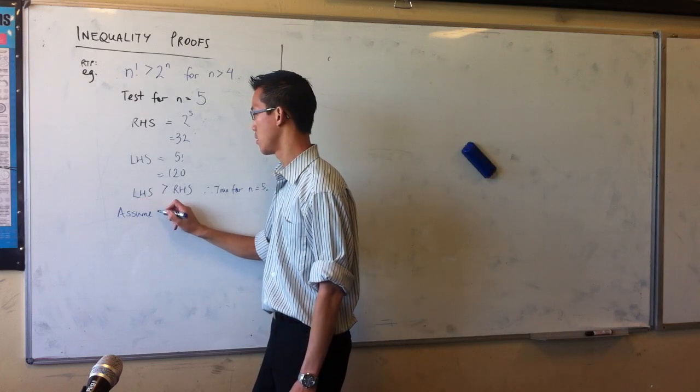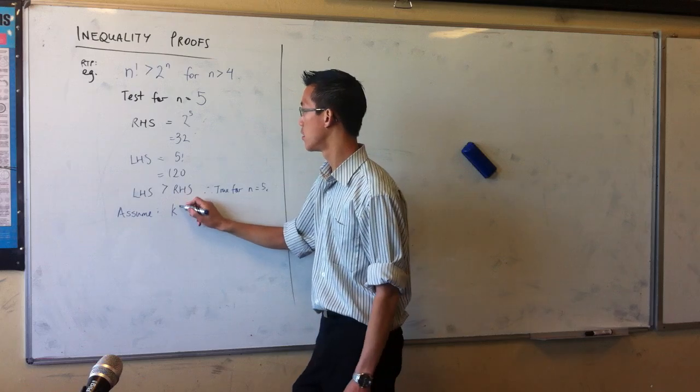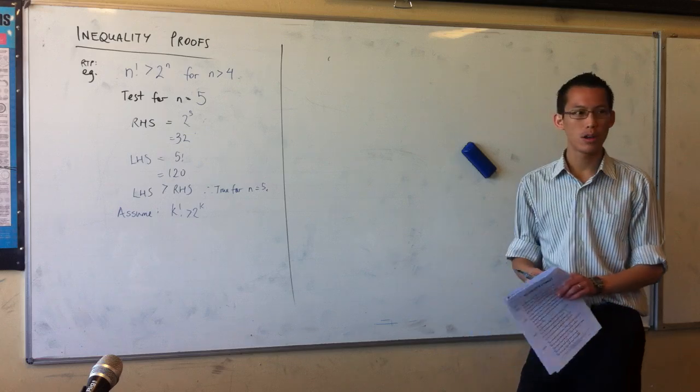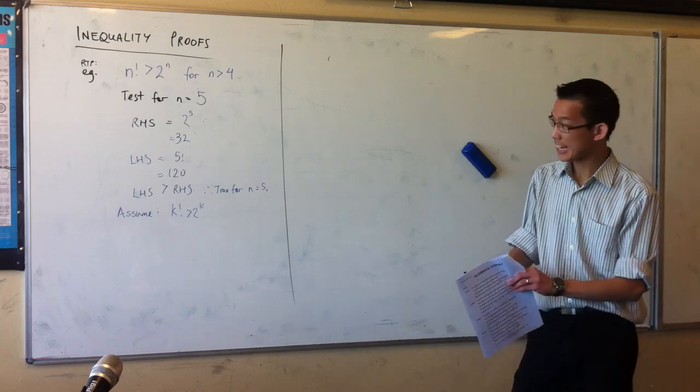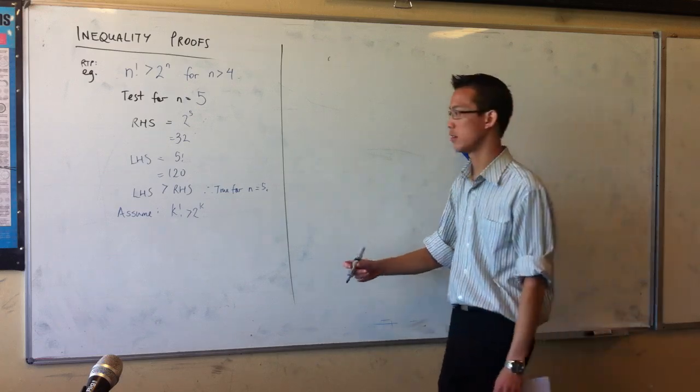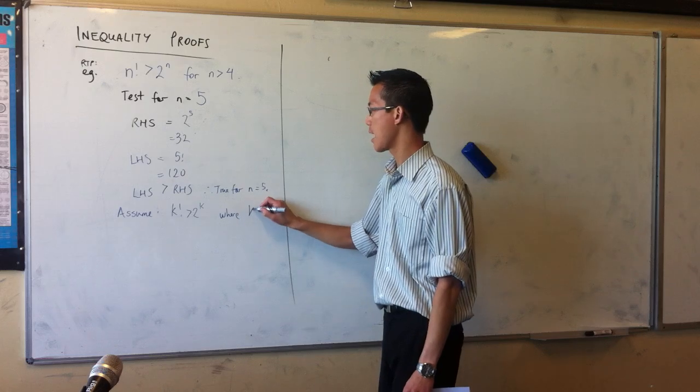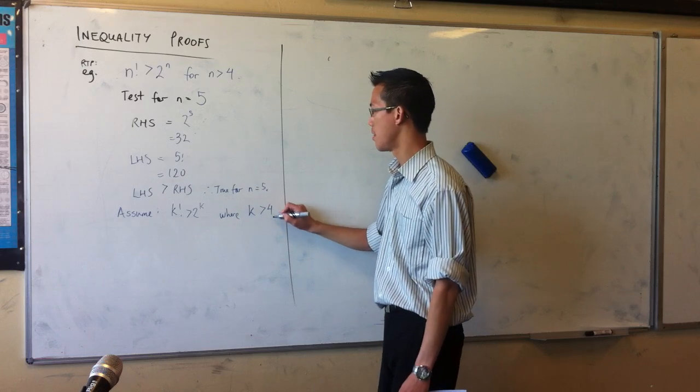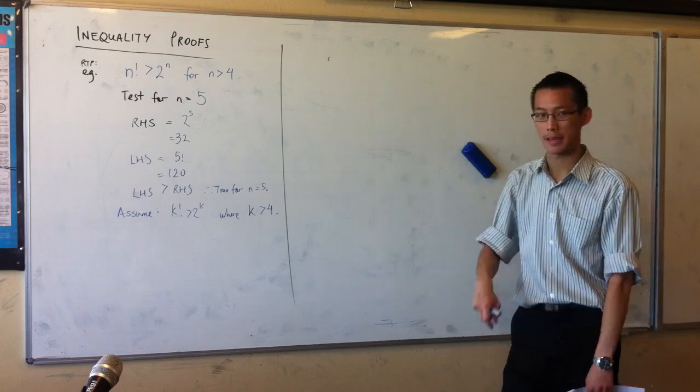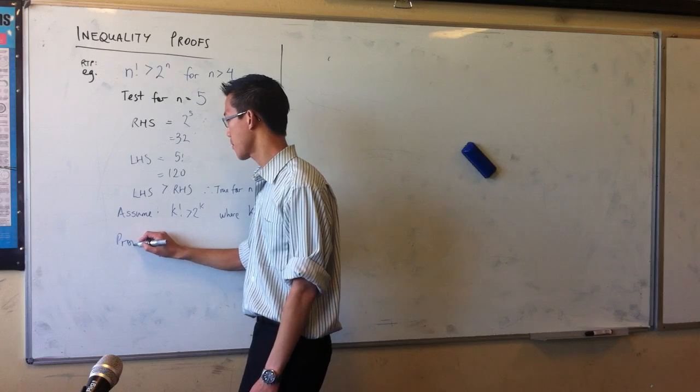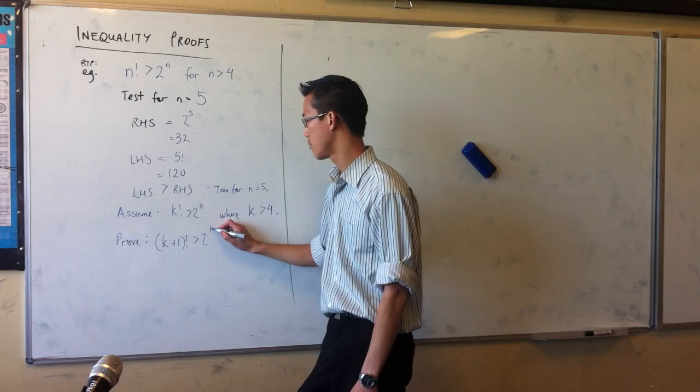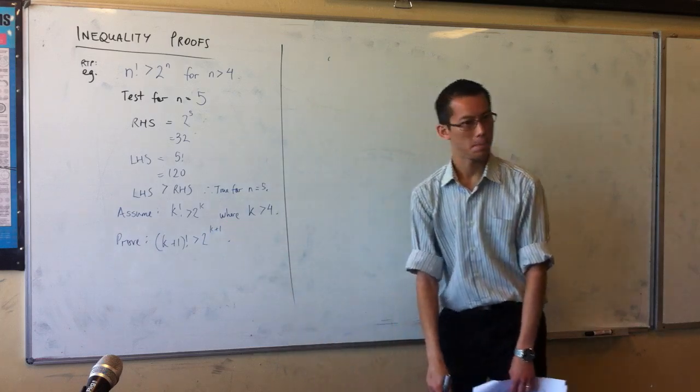That was the test. Here's the assumption. Now, by the way, because n has to follow certain rules, right? Namely, it's greater than 4. And k is a particular kind of n, then k has to obey the same rules as well, right? So k must be greater than 4. And this will turn out to be crucial for us later, though. Later on. Now, what do we have to prove? k plus 1 factorial, greater than 2 to the k plus 1.